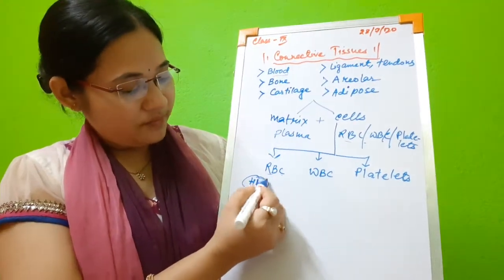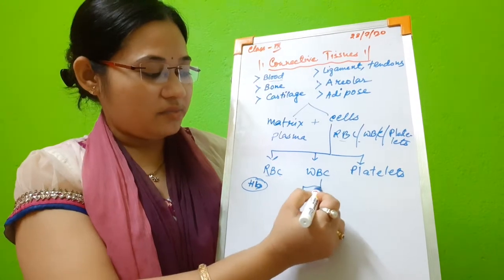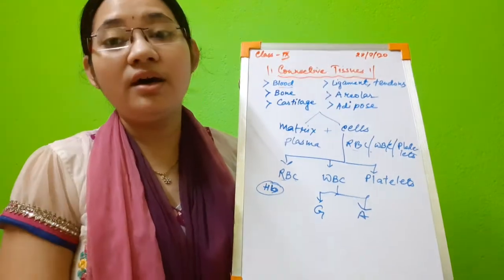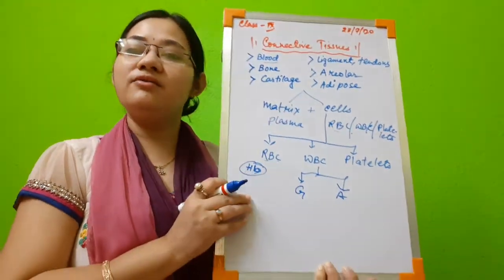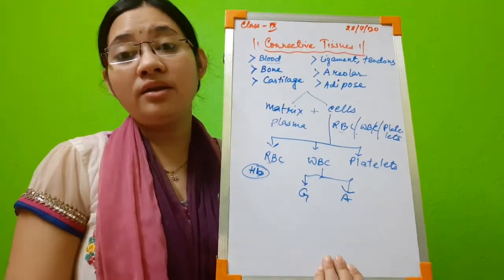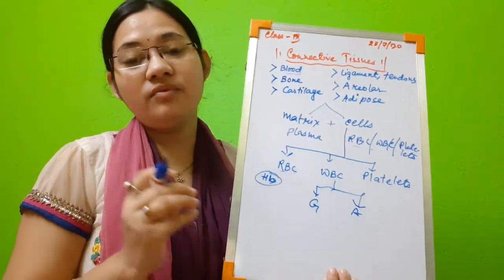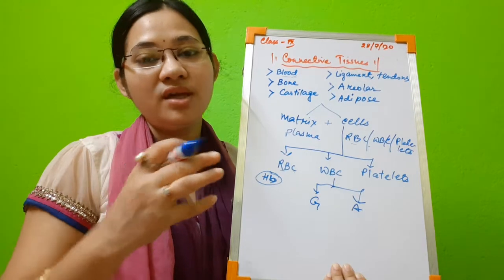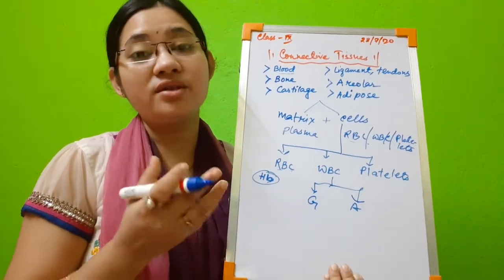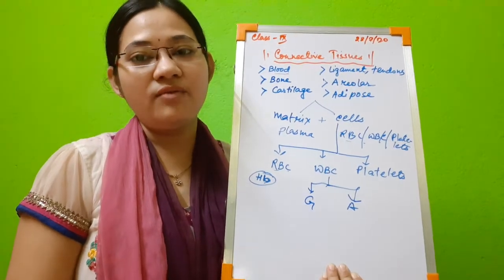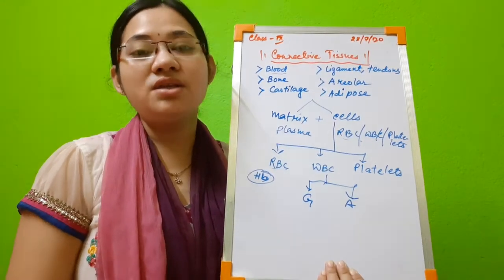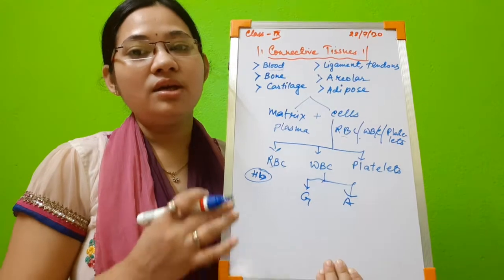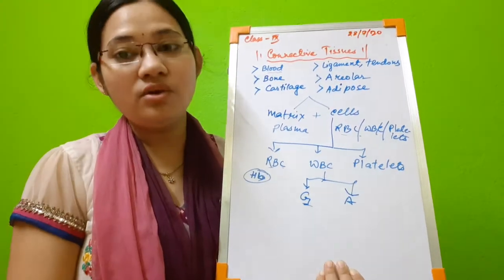WBC are of two types: granulocytes and agranulocytes. Granulocytes have granules in them. When the cell phagocytoses or eats up any foreign substance, it releases those granules. Sometimes these granules contain chemicals like histamine or heparin, which act as anti-inflammatory substances or anti-coagulants. So they protect our body and give immunity — these are called granulocytes.